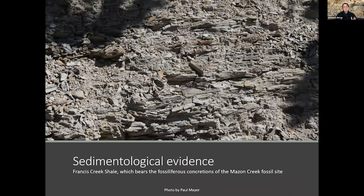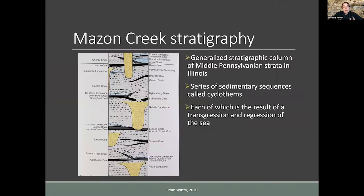The Maison Creek was truly transitional — probably occurring in a deltaic environment with input from both the terrestrial environment and at least brackish to somewhat marine environments. It was transitional not just in location but also over time, recording a marine transgression. Looking at the sedimentological evidence — evidence from the rocks themselves about depositional environments — the Maison Creek fossil site is held within a light gray shale called the Francis Creek Shale.